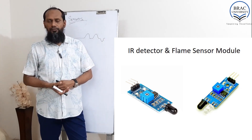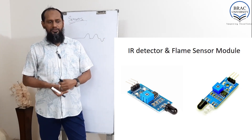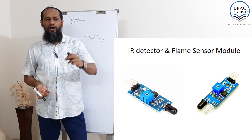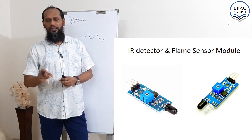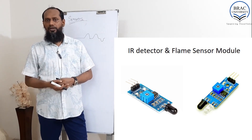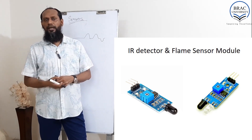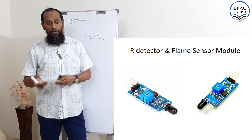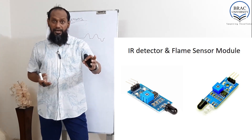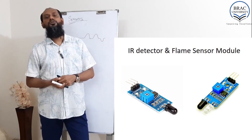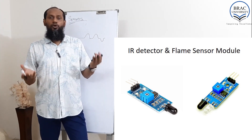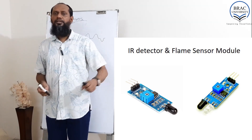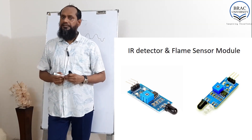There are two interesting IR sensors. One is for detecting flame, and another one is for detecting a line — white or black line. In some cases it is used as a proximity sensor. Both of these sensors are digital sensors.